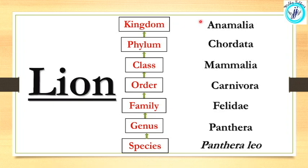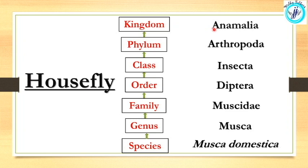For lion: species is Panthera leo, genus is Panthera, family is Felidae, order is Carnivora, class is Mammalia, phylum is Chordata, kingdom is Animalia. For housefly: species is Musca domestica, genus is Musca, family is Muscidae, order is Diptera, class is Insecta, phylum is Arthropoda, kingdom is Animalia.